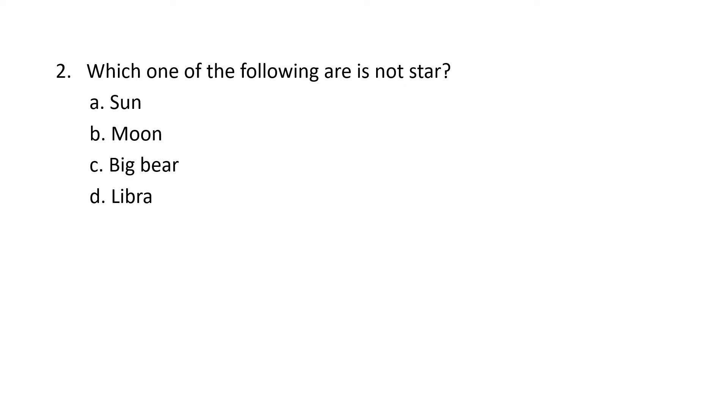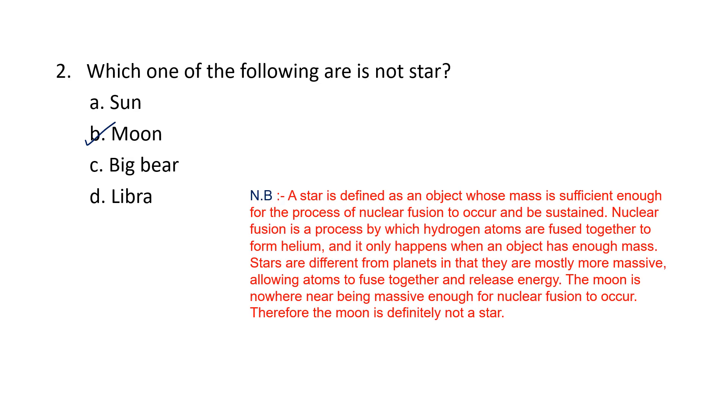Moving on to next question: which one of the following is not a star? Sun, Moon, Big Bear or Libra? The correct option would be Moon. Why Moon? Because a star is defined as an object whose mass is sufficient enough for the process of nuclear fusion to occur and be sustained. Nuclear fusion is a process in which hydrogen atoms are fused together to form helium.